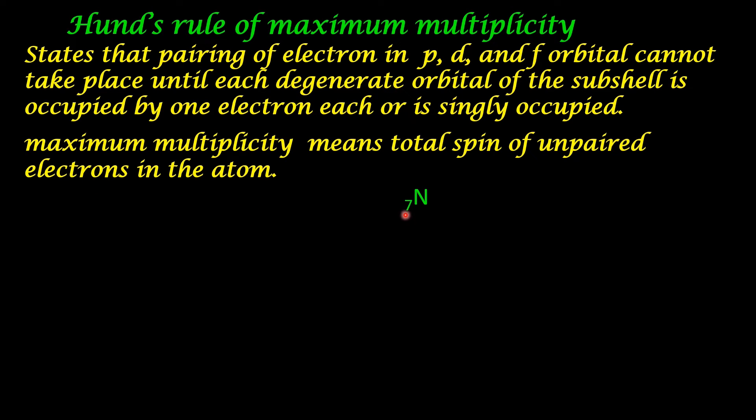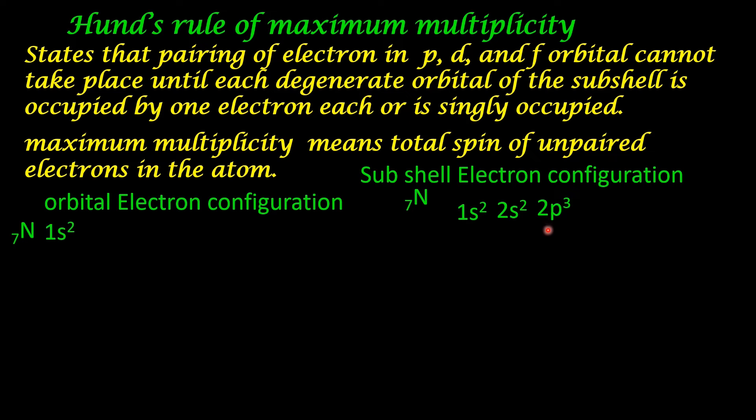I will explain that with the help of an example, that is nitrogen. The atomic number is 7. The subshell electron configuration is 1s2, 2s2, 2p3. In this configuration, you cannot know how these three electrons in the p subshell are distributed at the orbital level.